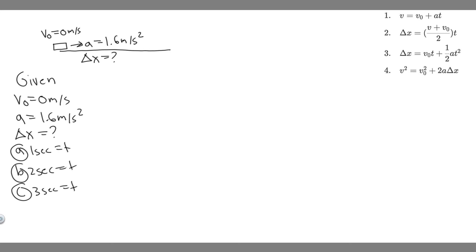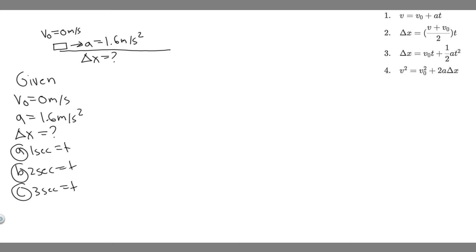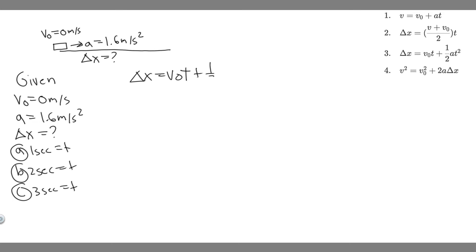We're going to solve this using kinematics. The equations on screen are kinematic equations, and we can plug in different kinematic variables — velocity, acceleration, time — to solve for delta x. Looking at the equations on the right, the equation we're going to use is number 3. We have the initial velocity, we have the time, and we have the acceleration, and we're solving for delta x. So: delta x equals v-sub-0 times t plus one-half a t squared.